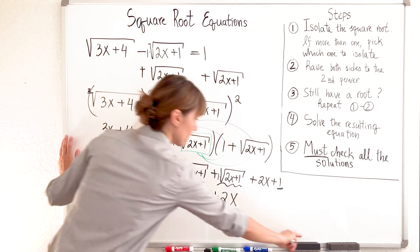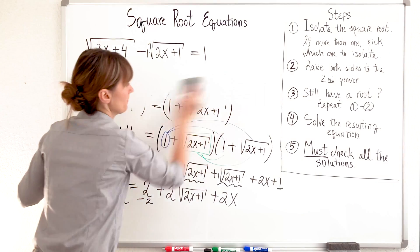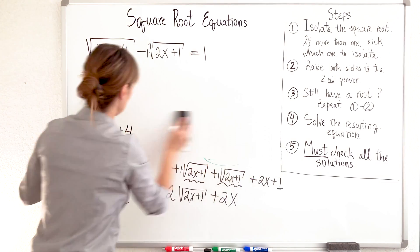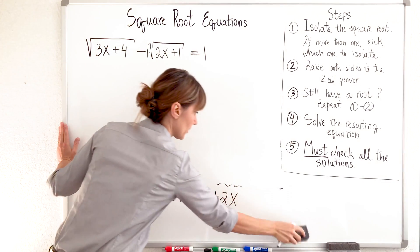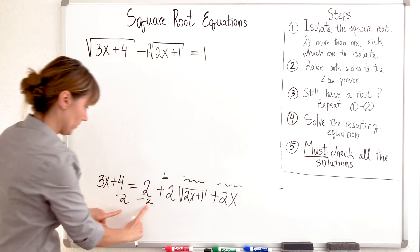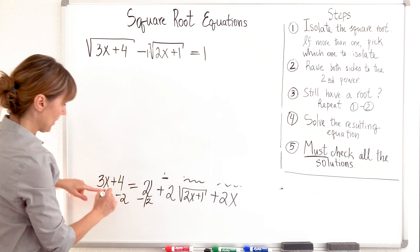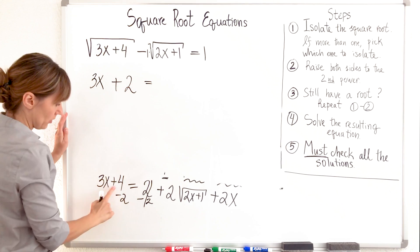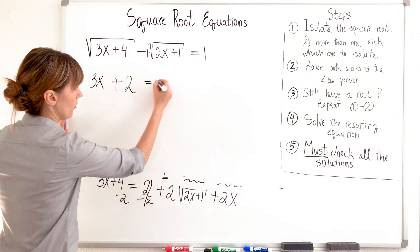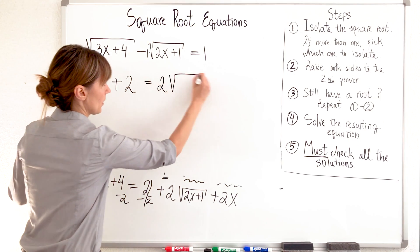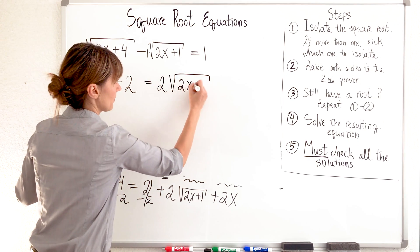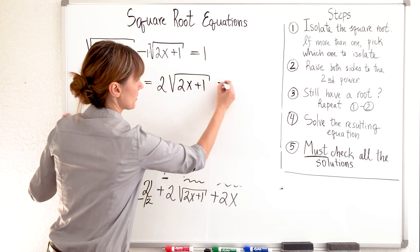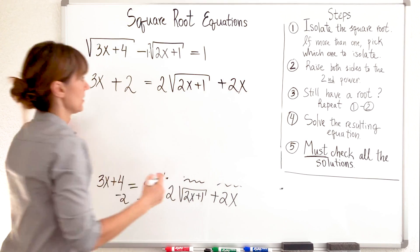Subtracting 2 from both sides, I'm going to have more space here. Subtracting 2 from both sides, I will have 3x plus 2 because 4 minus 2. On the other side, 2 square root 2x plus 1 plus 2x plus 2x. Much nicer. I like it. It's less all these complicated things.